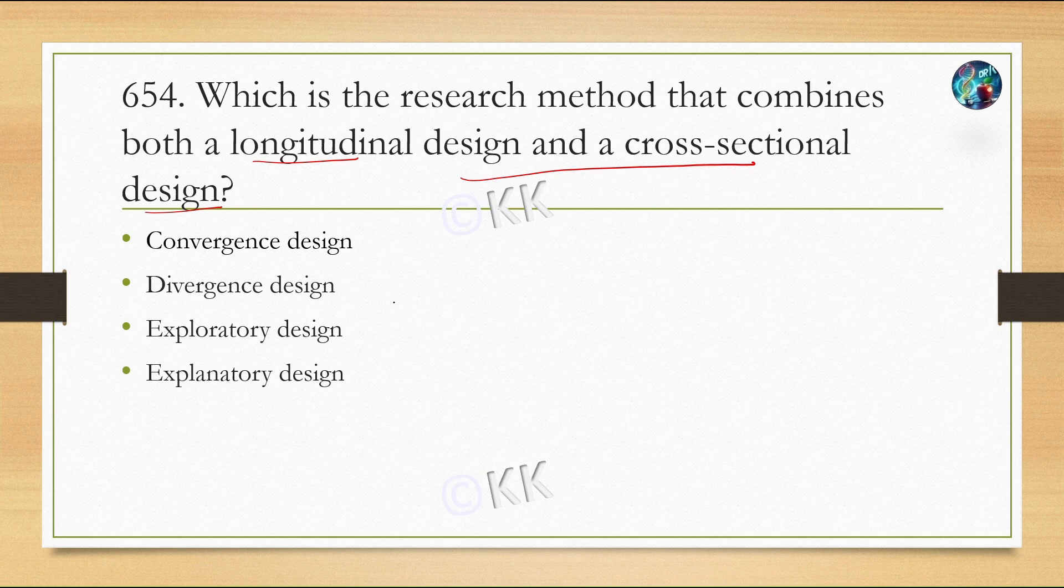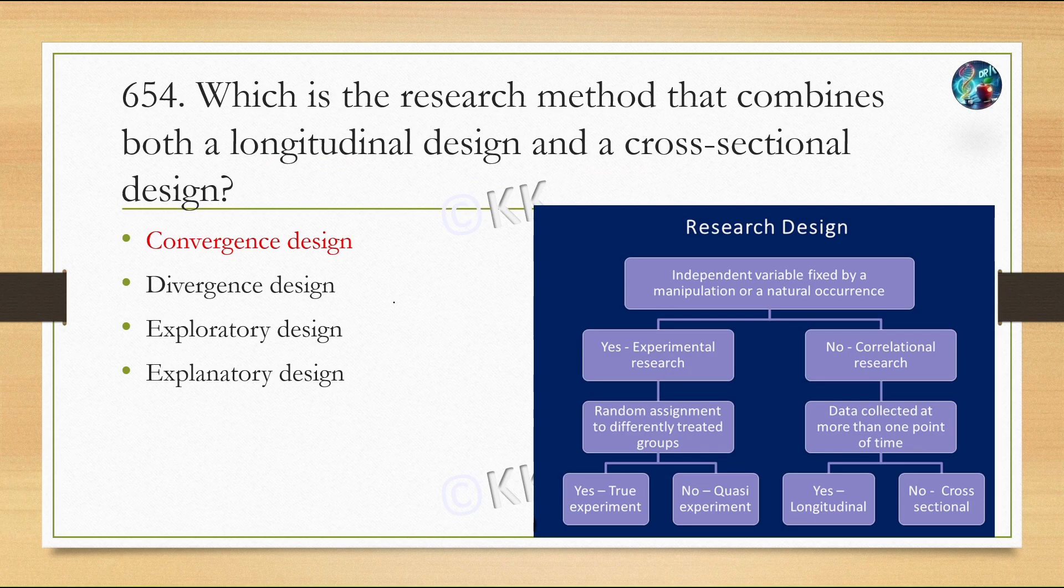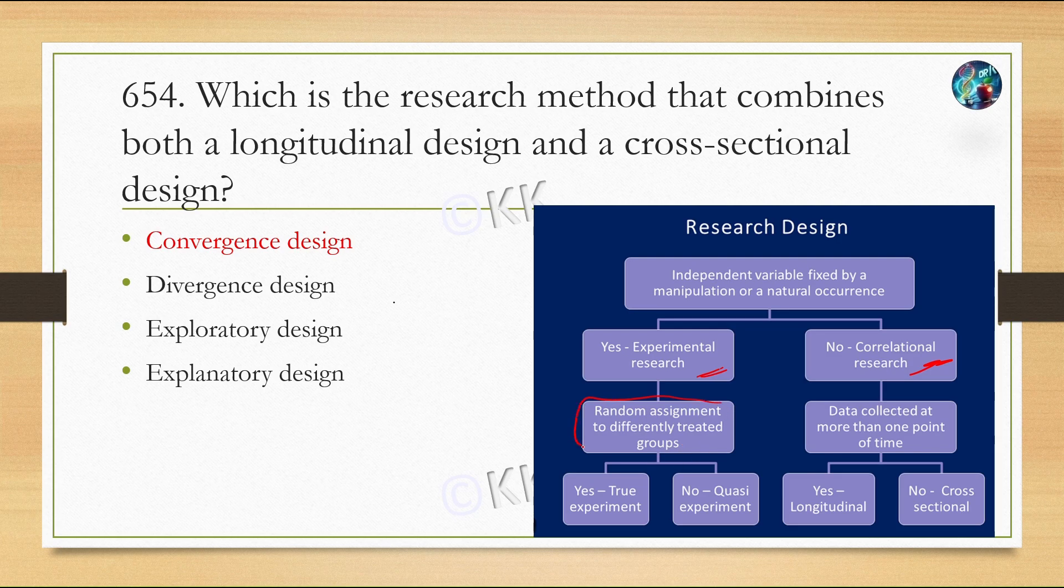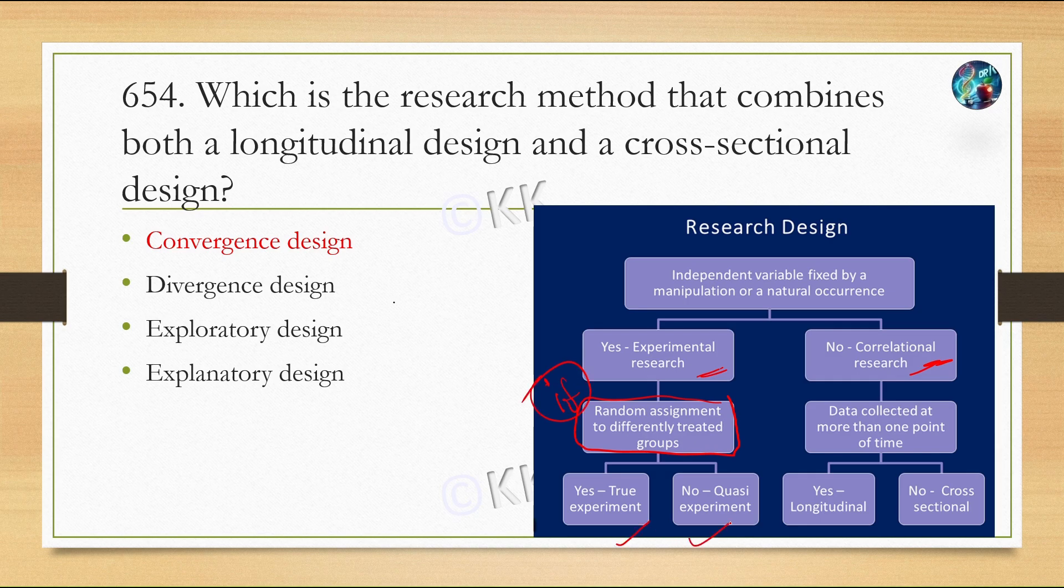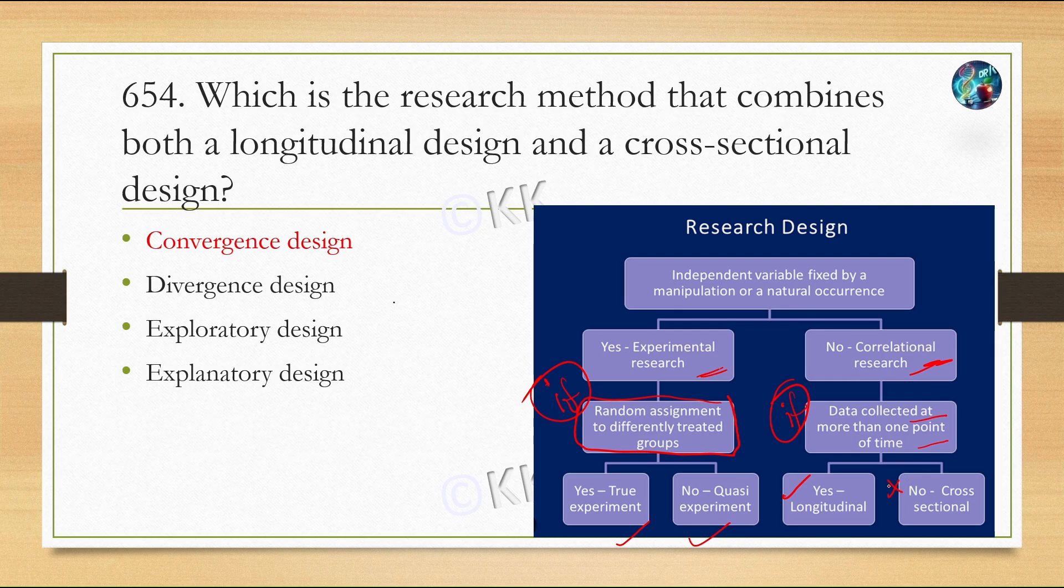The flowchart shows: Independent variable fixed by manipulation or natural occurrence. If yes, this is experimental research. If no, this is correlational research. In experimental research, if there is random assignment to different treatment groups, this is true experiment. If no, this is quasi-experiment. In correlational research, if data is collected at more than one point in time, this is longitudinal research. If not, this is cross-sectional research.